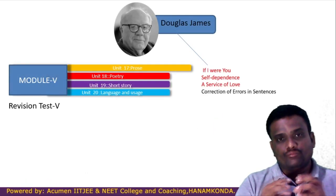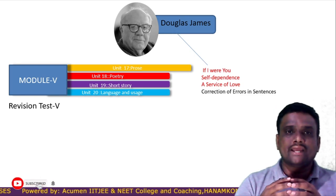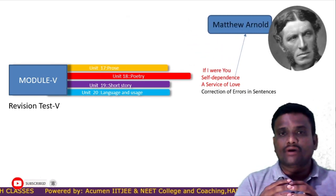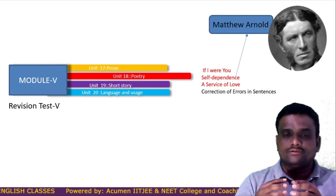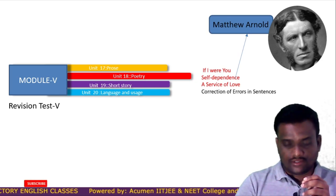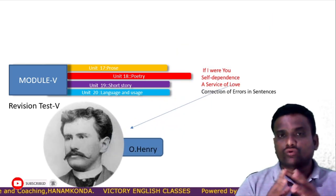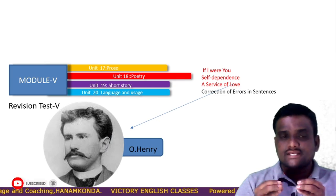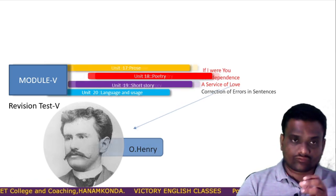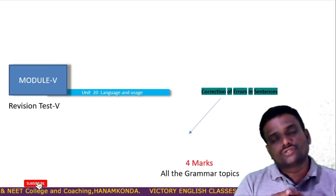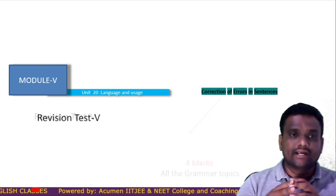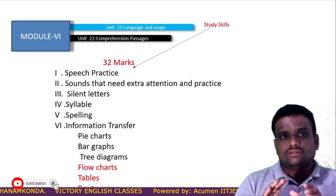Module number five. The prose is 'If I Were You' by Douglas James. The poetry is 'Self-Dependence' by Matthew Arnold. The short story of module five is 'A Service of Love' by O. Henry. These three were also taken out of the syllabus for this year. Then a kind of revision test will also be conducted.